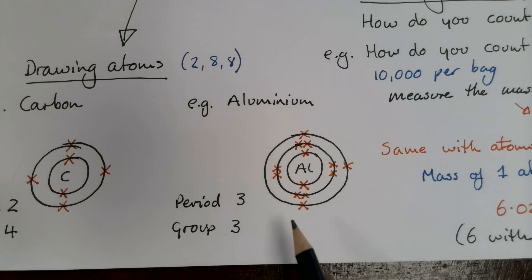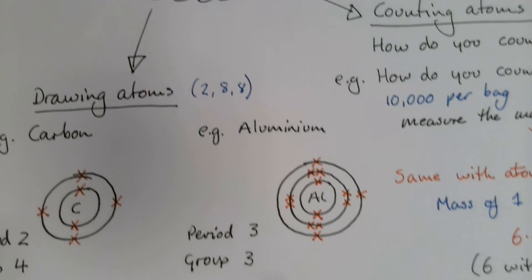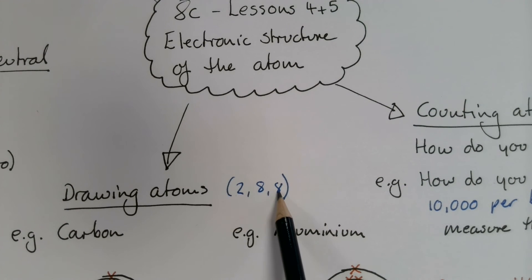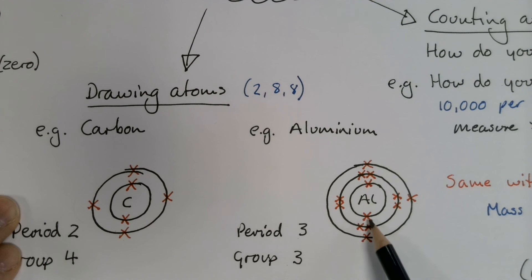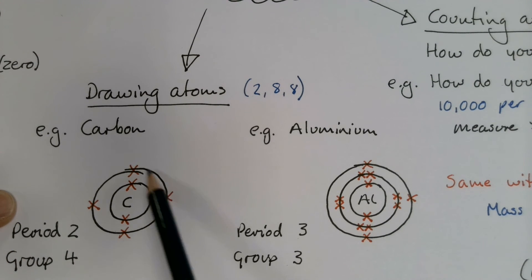So the order that we fill up the shells or the capacity of each shell is always two, eight, and eight. And we always fill from the inside outwards. And there's a couple of checks that you can do. Just make sure that the number on the outer shell matches the group number. And you should be able to draw lots and lots of different atoms. And this rule sort of works for the first twenty.